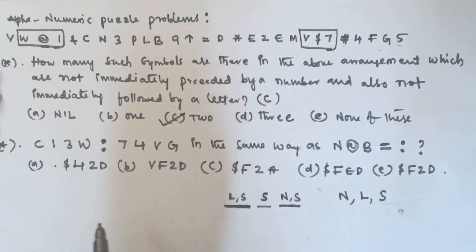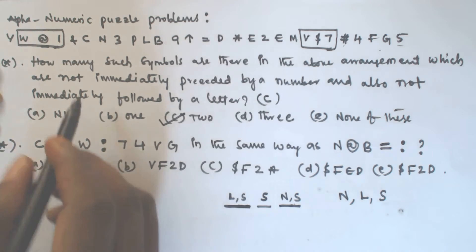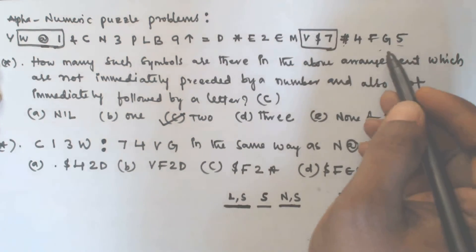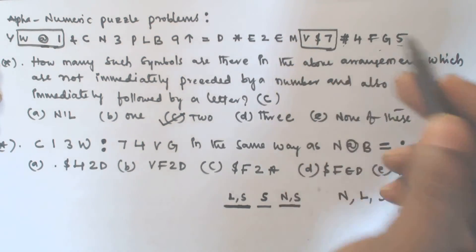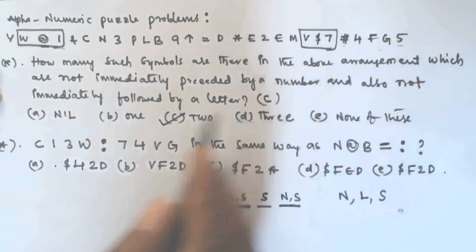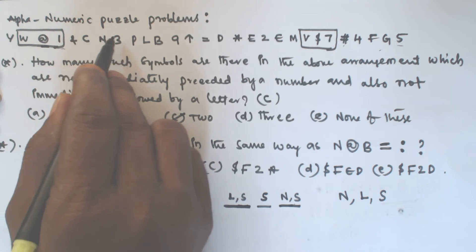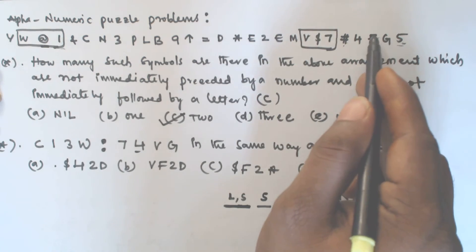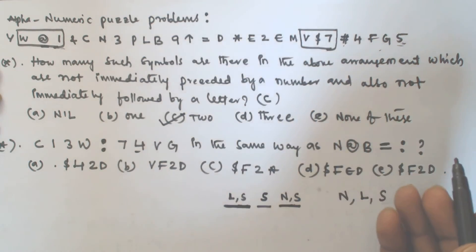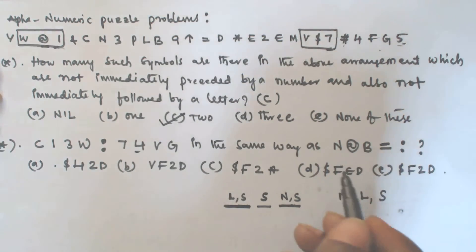For question 2, C 1 3 W corresponds to 7 4 V G. Looking at the sequence, C is at position 6 from the left, and 7 is also at position 6 from the right. So the pattern maps each element's left-side position to the corresponding position from the right side of the sequence.